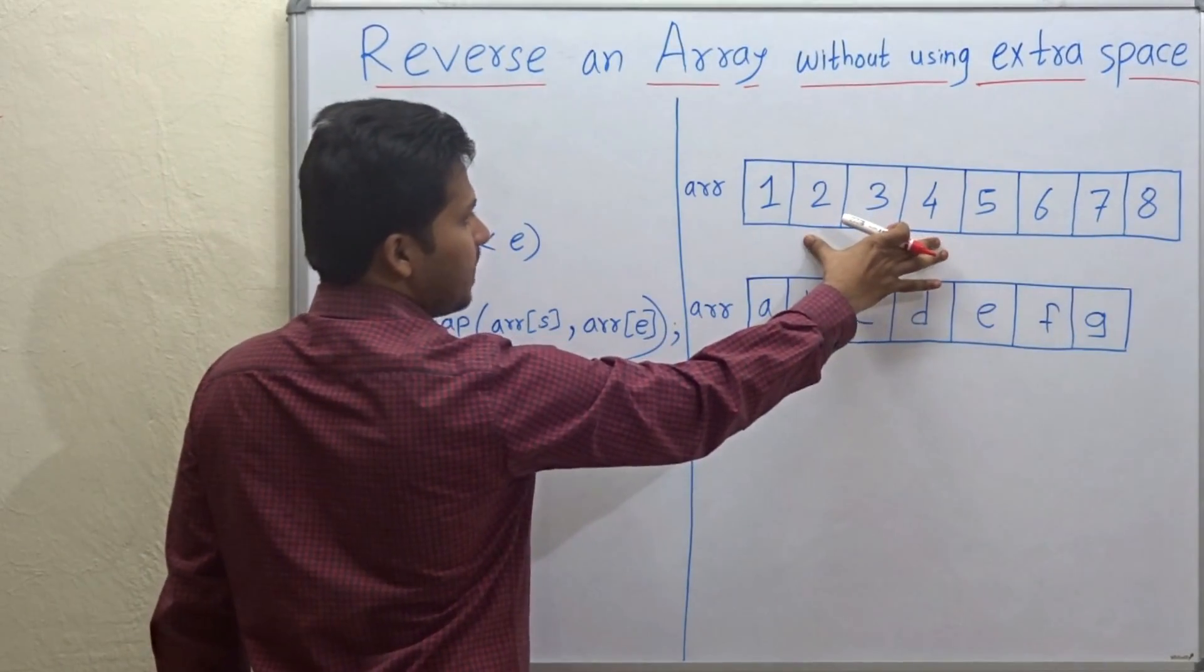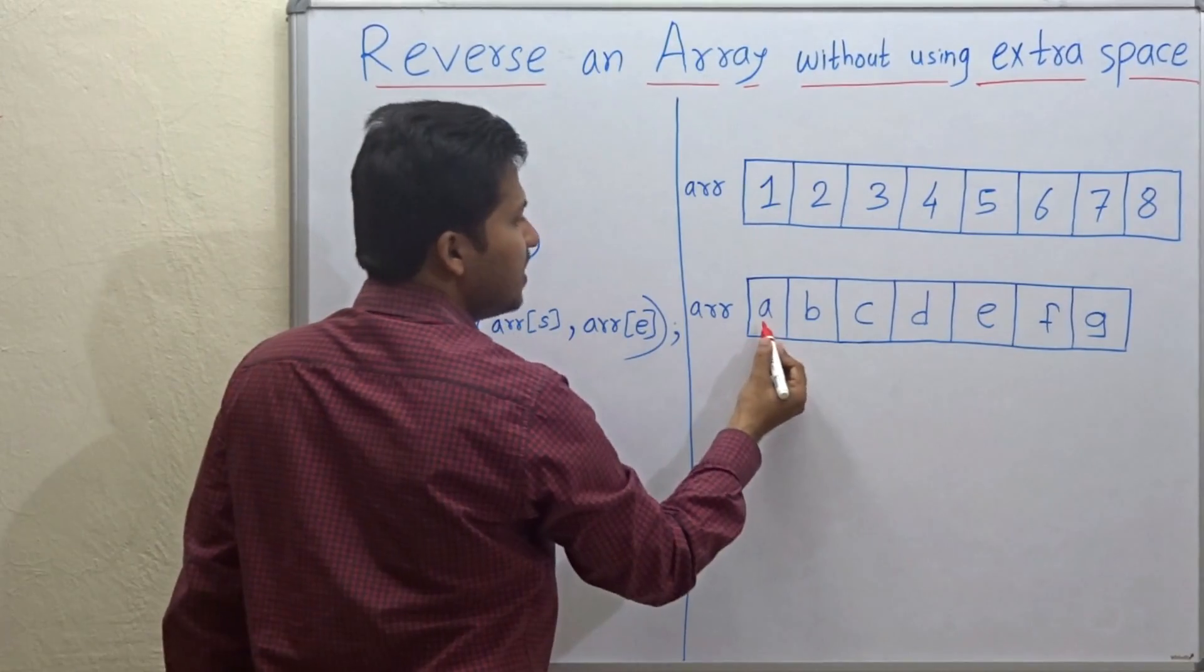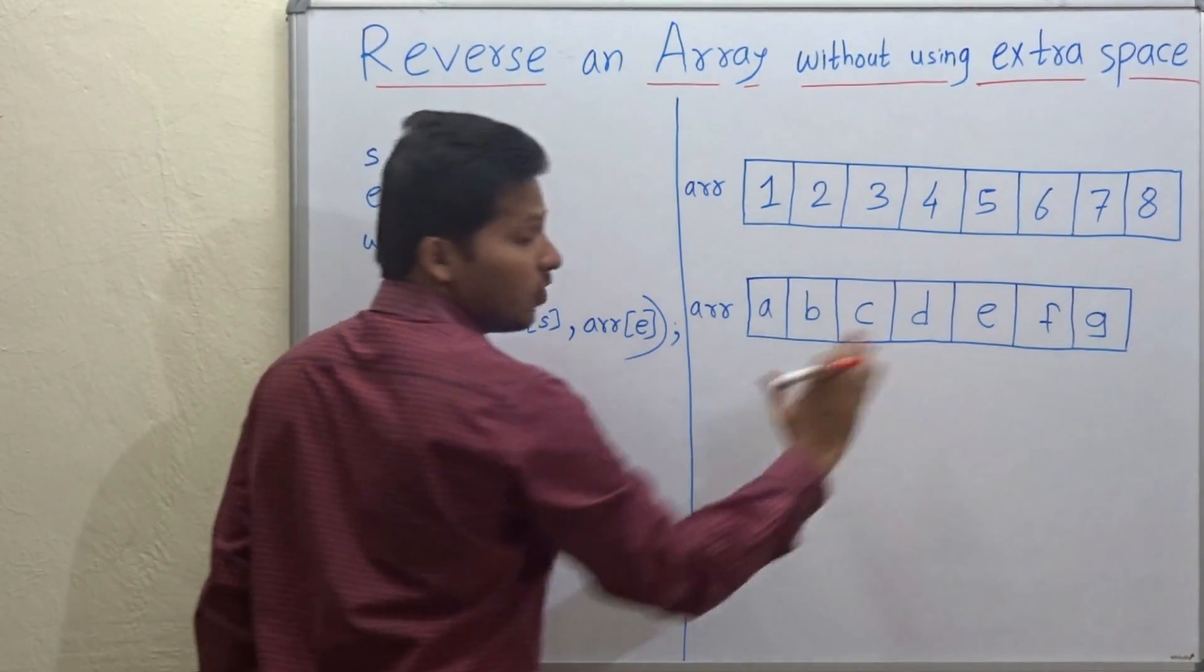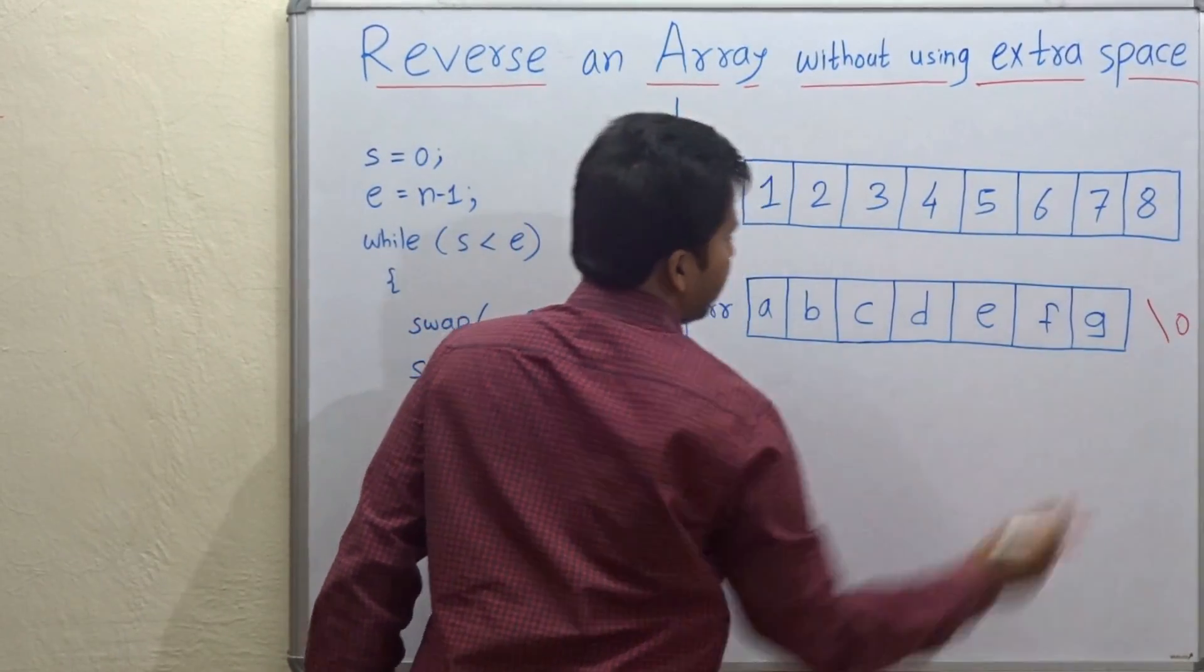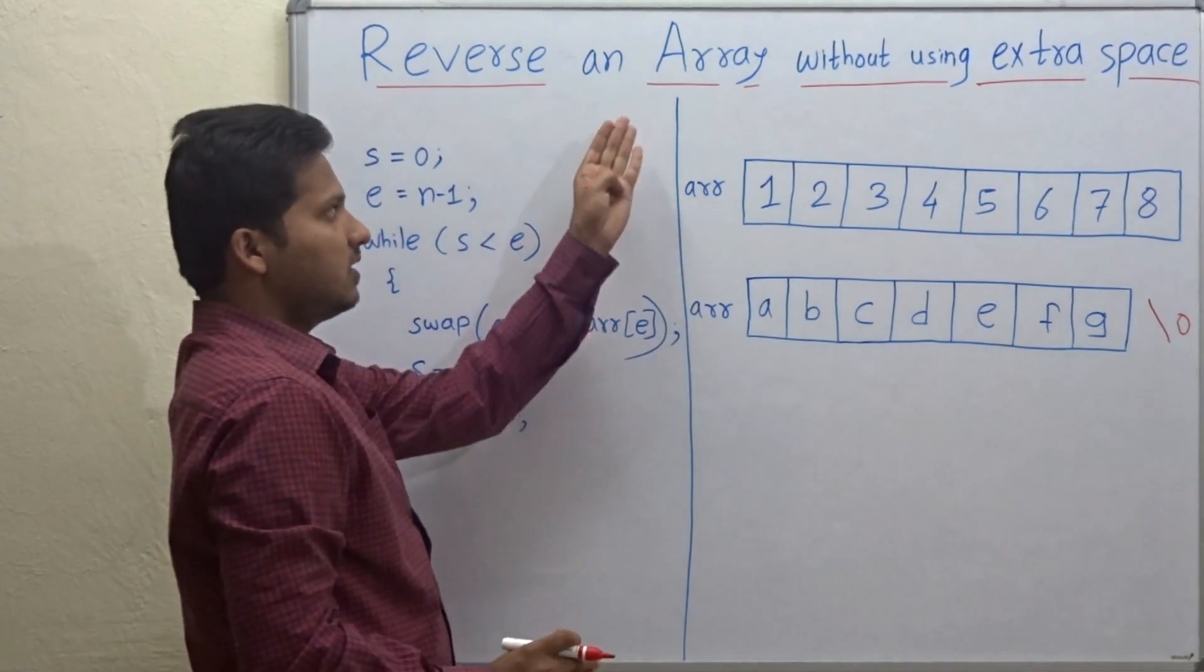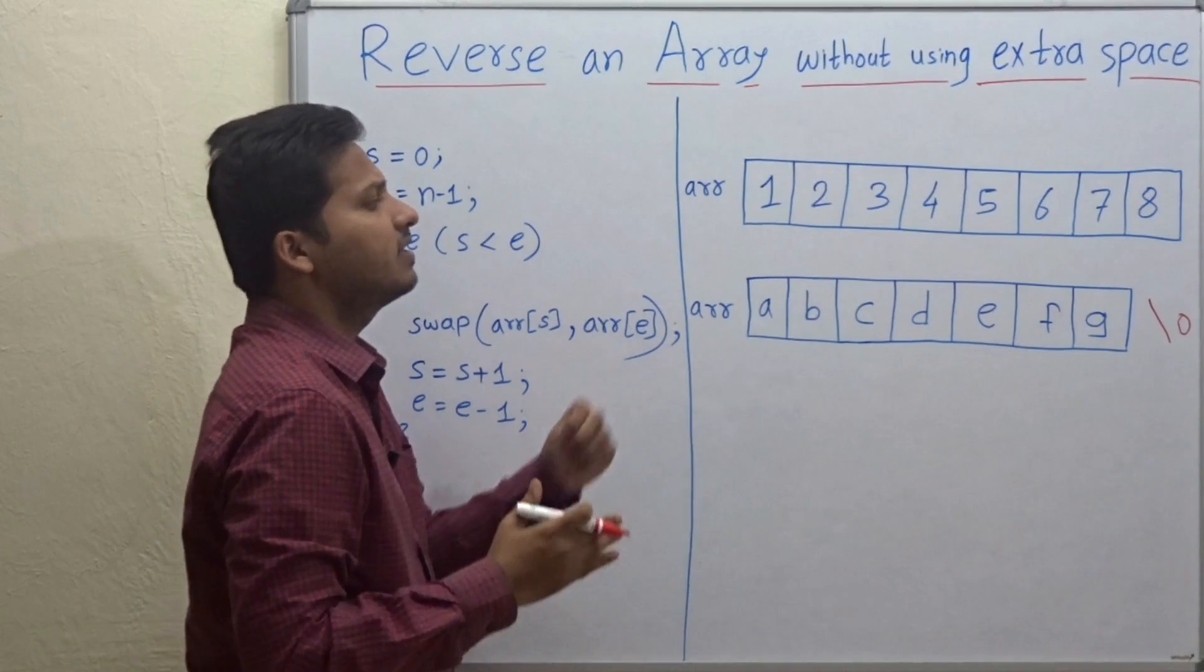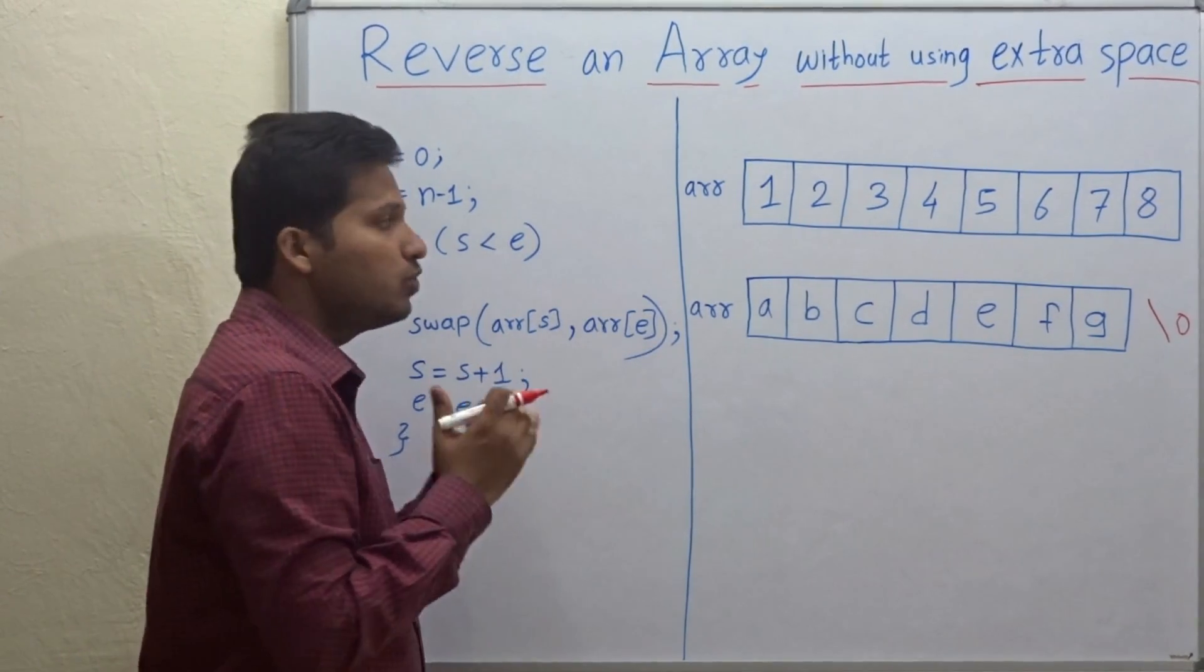So this is the array. The array can be an array of integers or it can be an array of characters. This array of characters can also be called as string if we append a null character. So if we want to reverse an array of integers or a string or an array of characters without using extra space, then how to do it?